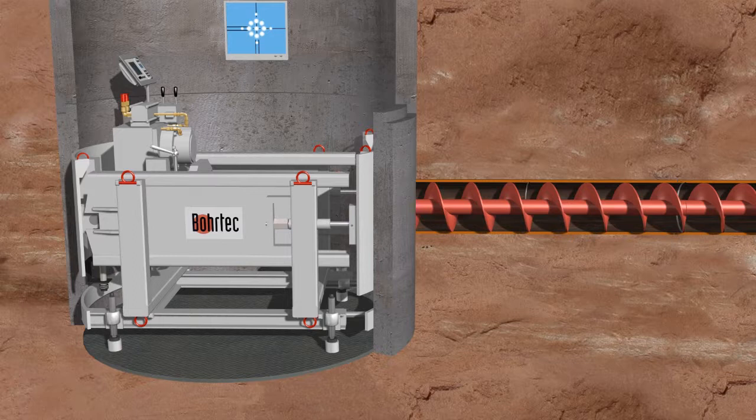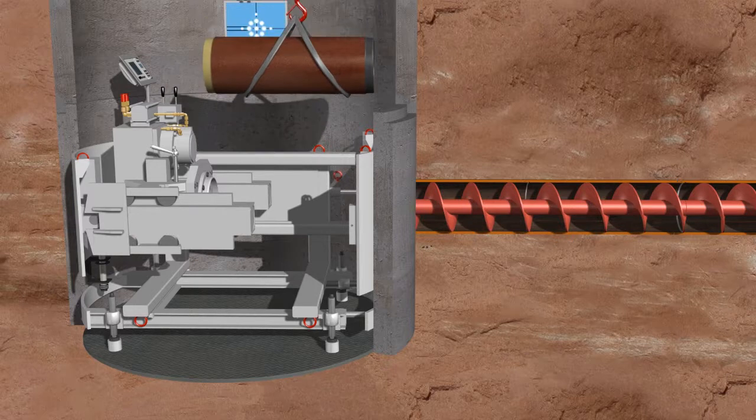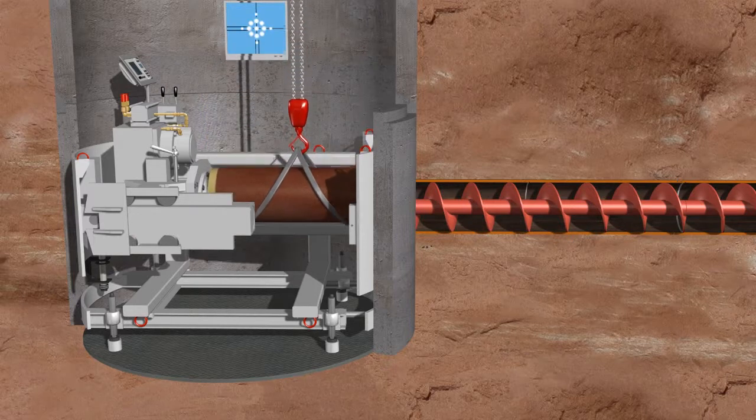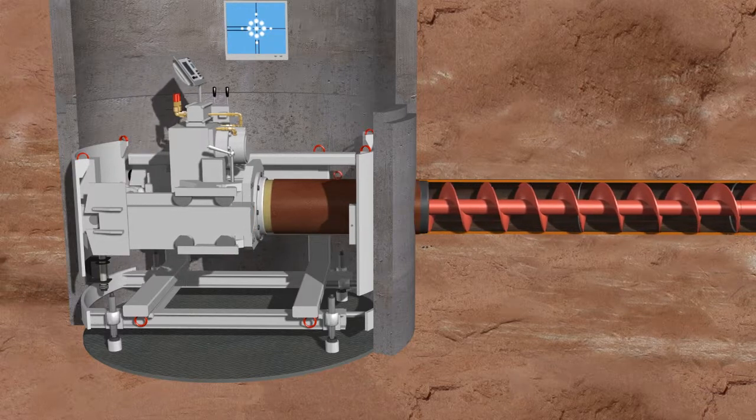If product pipes to be installed have the same outer diameter as the casing, then the first product pipe is coupled to the casings in the launch shaft and jacked into place in the second step of the operation, like the clay pipes in this example.